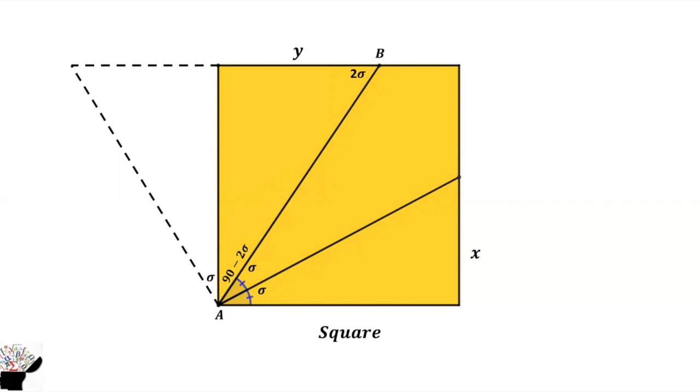Now if this is theta and this angle is 90 degrees, this side will be 90 minus theta. This side is already x, so the x here is the same. We just reflected to the left side.